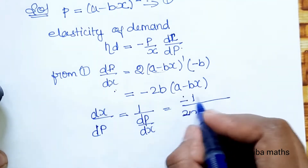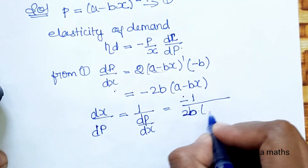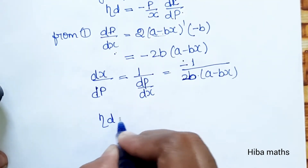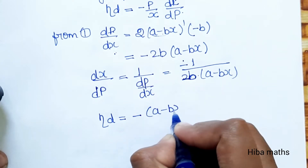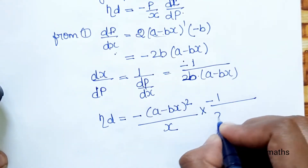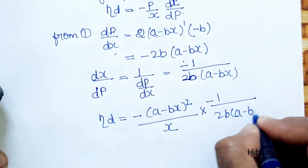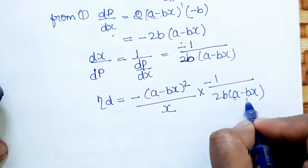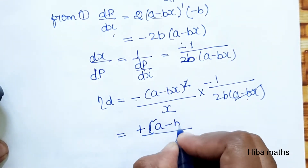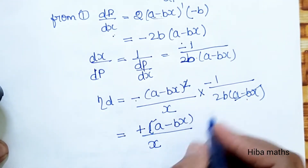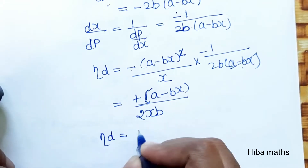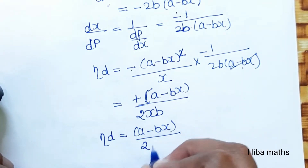So dx by dp equals minus 1 divided by 2b(a minus bx). Now substituting all values into eta_d: eta_d equals minus p value (a minus bx) whole square, divided by x, into minus 1 by 2b(a minus bx). The (a minus bx) terms cancel, giving eta_d equals (a minus bx) divided by 2bx.